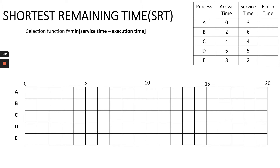Let us look at the same example as in the previous videos, where we have five processes each specified with their own arrival time and service time as shown in the table. Starting at time slot zero, process A is the only process and begins execution. Because no new process arrives, process A continues running in the processor at time slot one.